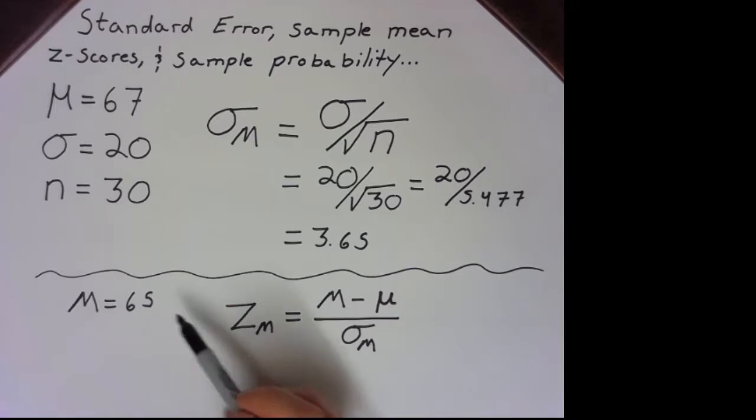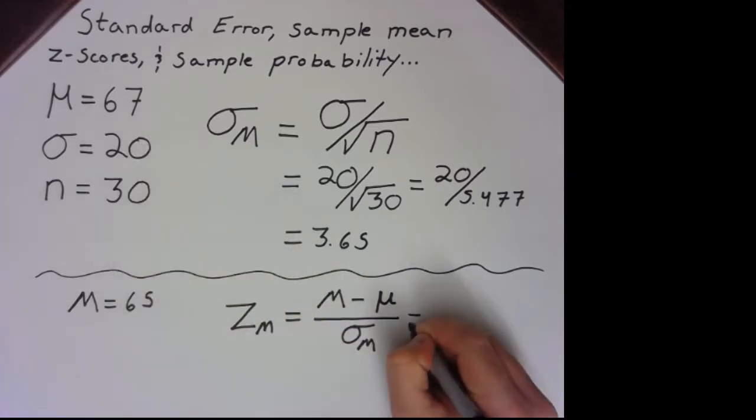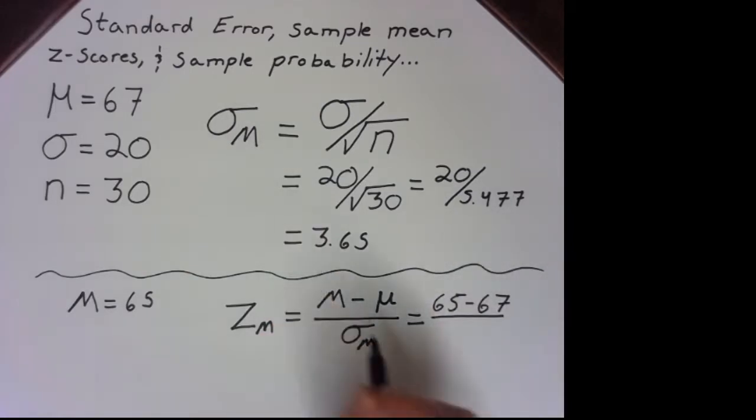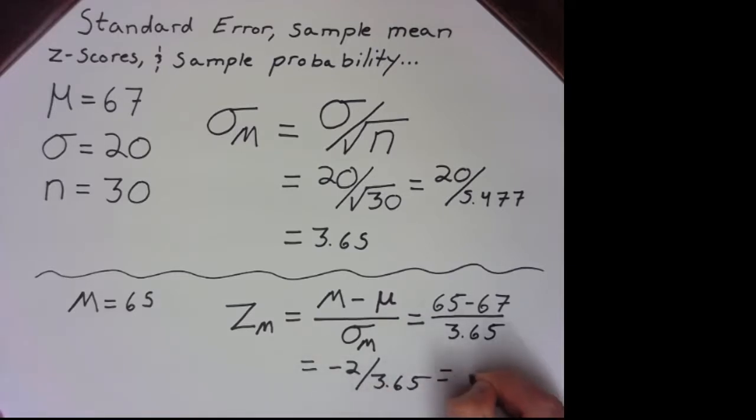Now we have all these values already, so we just have to substitute them in: 65 for the sample mean, 67 for the population mean, and our standard error is 3.65. So 65 minus 67 is negative 2. Divide 3.65 into that, and we get negative 0.55.